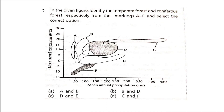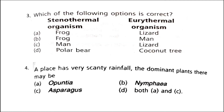Next: in the given figure, identify the temperate forest and coniferous forest respectively from the markings A to F and select the correct option. The correct option is option C. Coniferous forests occur just south of tundra across North America, Europe, and Asia, and are also found in the southern hemisphere. Precipitation in coniferous forests is 10 to 35 cm in drier parts and over 150 cm in wetter parts, occurring both as rain and snow. The average temperature is less than 15°C. Temperate forests are found in both northern and southern hemispheres, with annual precipitation between 75 to 250 cm and average temperature between 6 to 20°C.